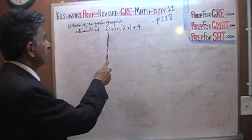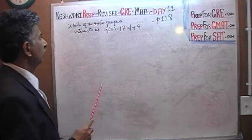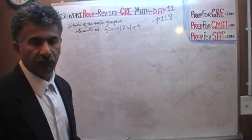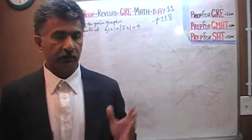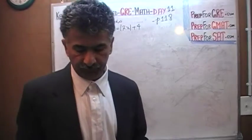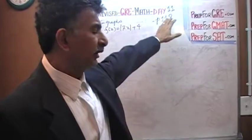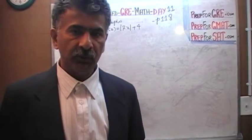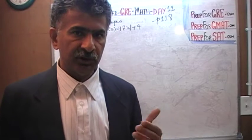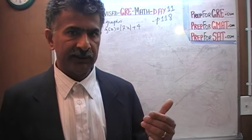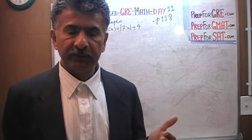We are given an equation f(x) equals the absolute value of 2x plus 4, and the question simply is: which of the following five graphs will eventually intersect with this graph? If you have not watched Day 10, make sure you watch Day 10 first, because today is Day 11 and this is a continuation of what I did yesterday.